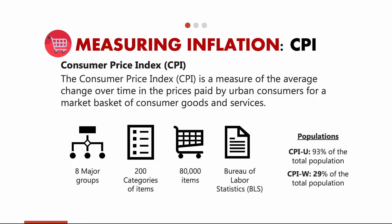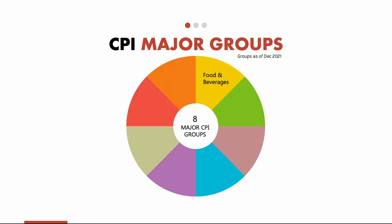CPI-W is used by the Bureau of Labor Statistics to calculate the cost of living adjustment, annual increases, and social security benefits. The CPI major groups number eight in total. First is food and beverages — like milk, cereal, wine, and snacks.